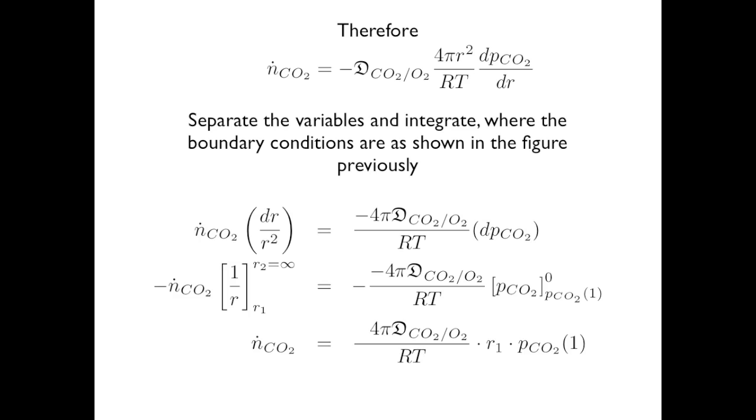We integrate and substitute the boundary conditions: r1 and r2, where r2 is infinite and the CO2 concentration becomes zero. The partial pressure of CO2 is zero at infinity, giving us our expression.